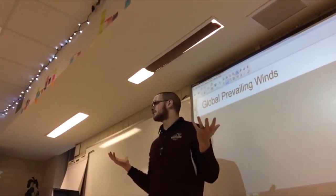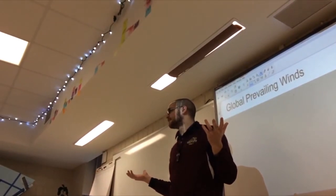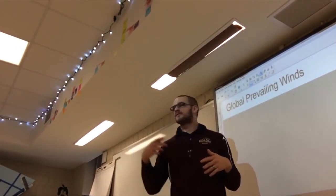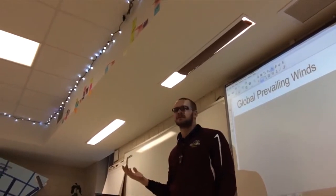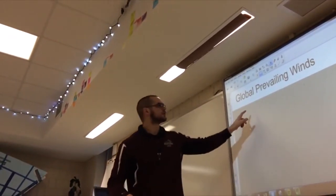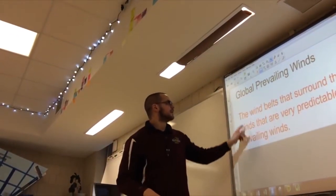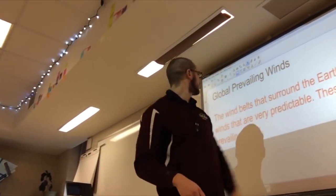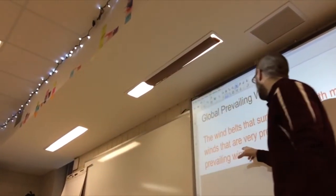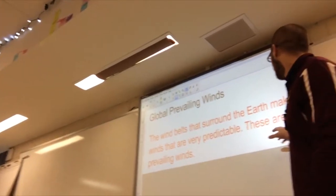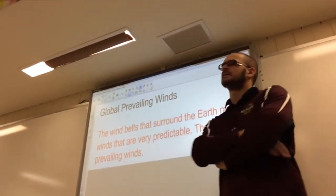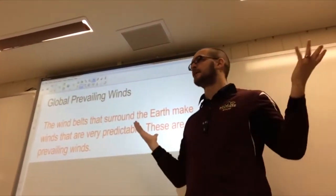So those winds are always typically there. It acts as this very predictable way to tell where the wind is coming from. Here's the first part of your notes. The wind belts that surround the earth make winds that are very predictable. These are the prevailing winds. What does prevailing mean?